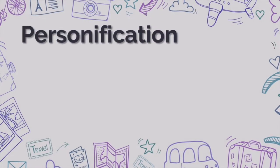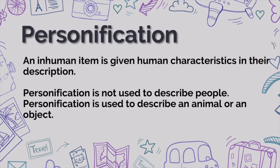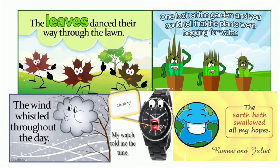Now, let's define personification. An inhuman item is given human characteristics in their description. Personification is not used to describe people, obviously. Personification is used to describe an animal or an object. For example, the leaves danced their way through the lawn. You can see the leaves dancing — well, actually, never do leaves dance, right? Only humans dance.